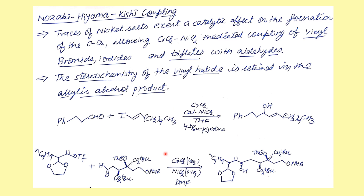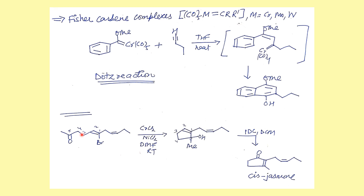In the Nozaki-Hiyama-Kishi coupling, we are making an organochromium compound and reacting it with an aldehyde to get the product. An important example is intramolecular NHK coupling: starting with a bromo-ketone substrate, you form the organochromium intermediate which reacts with the ketone intramolecularly. When you then treat with PDC, you get the hormone cis-jasmone. There is a double bond migration here. This is the whole reaction sequence, and there is a high probability this will be asked in the exam.